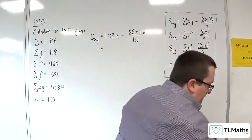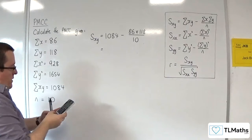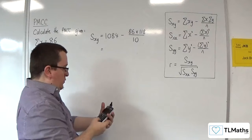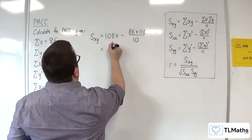So 1084 take away 86 times 118 divided by 10, which gets us 69.2.